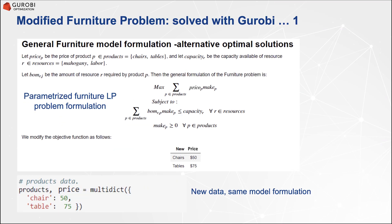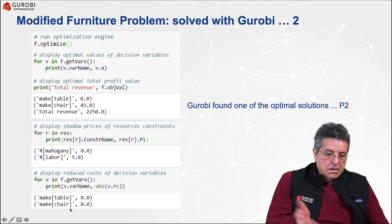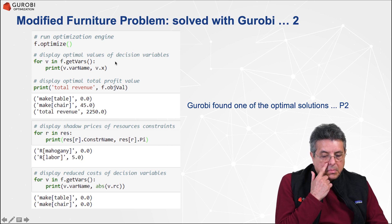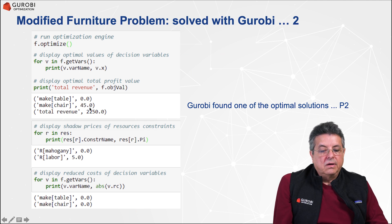Let's see how Gurobi deals with multiple solutions. We use the parameterized version of the furniture problem and change the price of chairs to $50 and the price of tables to $75 using the multidict function. The rest remains the same. We call the optimize method, and Gurobi finds one optimal solution: build 45 chairs and no tables, with an optimal revenue of $2,250.